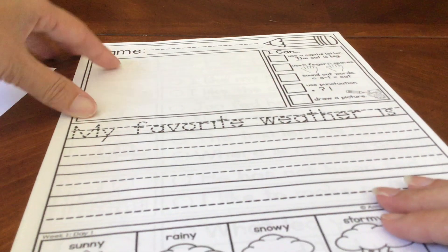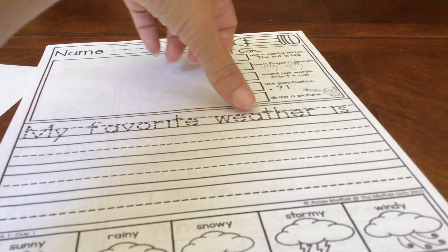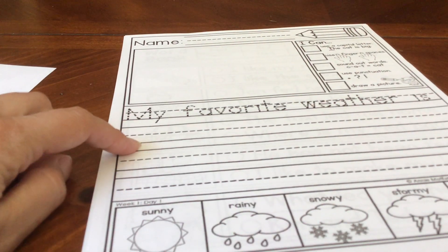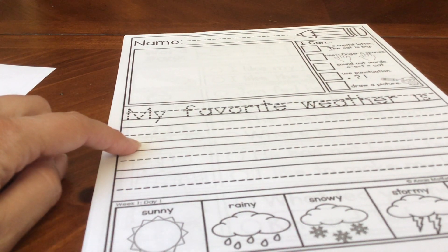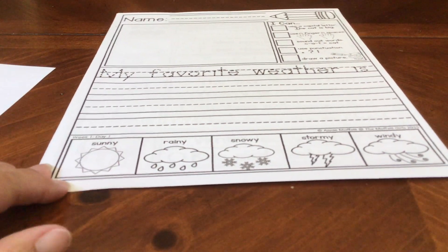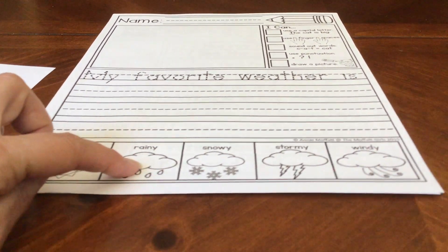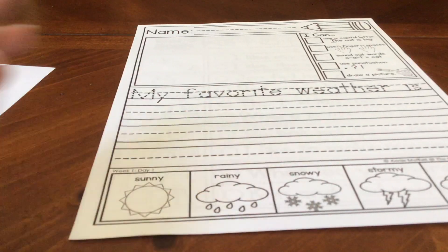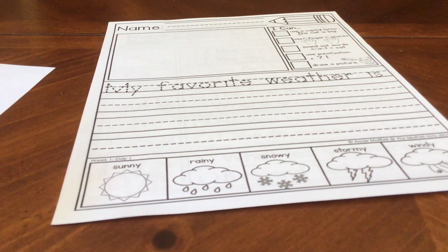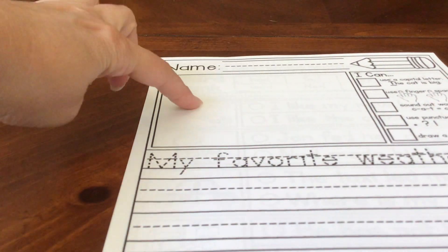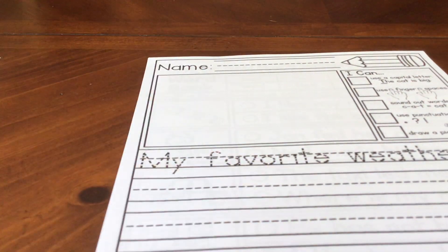Let's read what it says on the paper. My favorite weather is, and you've got to tell us, what is your favorite weather and why? Why is it your favorite? Here are some words to help you if you want to use them. Sunny, rainy, snowy, stormy, windy. So you could say, my favorite weather is sunny weather because, tell me why that's the best, why you like it. Then draw a picture to match in the box.